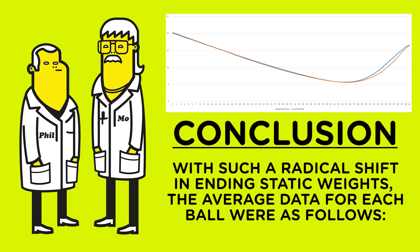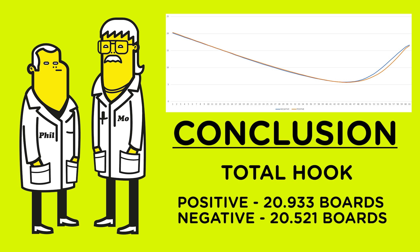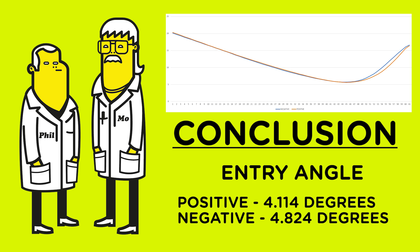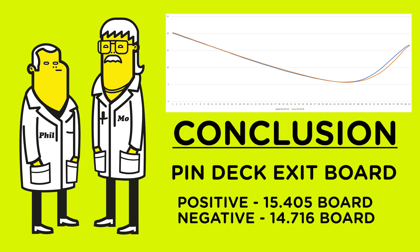The data shows that even with such a radical shift in ending static weights, the averages for each ball were the following. Total hook: there was a total hook difference of 4 tenths of a board — that's almost immeasurable. Same goes for the hook power, which is the total boards covered from the true break point; both balls were within 1 tenth of a board. The entry angle showed 7 tenths of a degree difference, and the pin deck exit boards were within 3 quarters of a board.